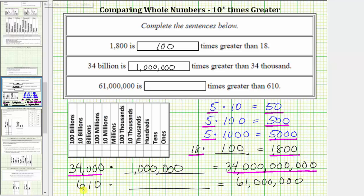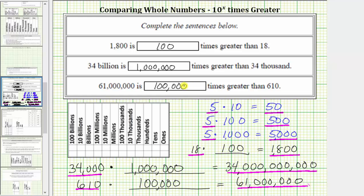Comparing the digits of 610 and 61,000,000, notice that 61,000,000 has five more zeros than 610, which means you'd have to multiply by 100,000 — one followed by five zeros — in order to get a product of 61,000,000. This indicates that 61,000,000 is 100,000 times greater than 610. I hope you found this helpful.